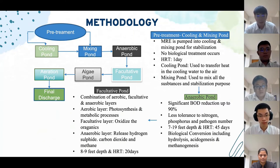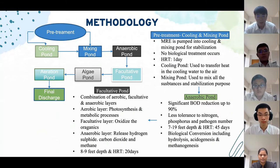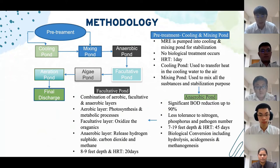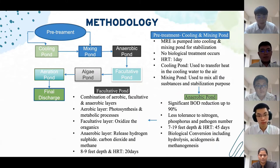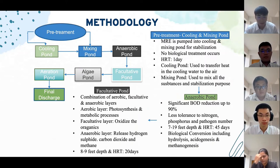Moving to primary treatment, the first pond is the anaerobic pond. Anaerobic digestion is one of the most useful biological treatments, giving very significant BOD reduction of up to 90%. However, it has less tolerance to nitrogen, phosphorus, and pathogen numbers. Anaerobic ponds are usually 7 to 19 feet deep to minimise the presence of oxygen and maximise heat retention. HRT for the anaerobic pond is 45 days. There are three steps of biological conversion of organic matter: hydrolysis, acidogenesis, and methanogenesis.